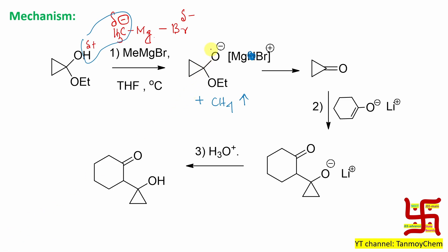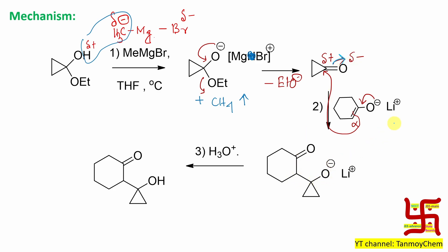In the second step, EtO⁻ leaves, and consequently what remains is cyclopropanone — the ketone. This carbonyl carbon is delta positive and the alpha carbon is more electron-rich and nucleophilic, so it attacks. This nucleophilic attack opens the ring. After ring opening, the negative charge goes to O⁻ and the Li⁺ remains close to O⁻ to maintain electroneutrality. In the next step, H₃O⁺ (workup) adds H⁺ to O⁻, giving the final alcohol. This is the addition product.